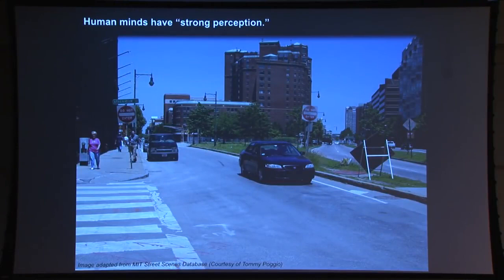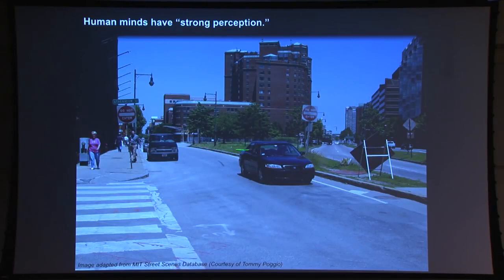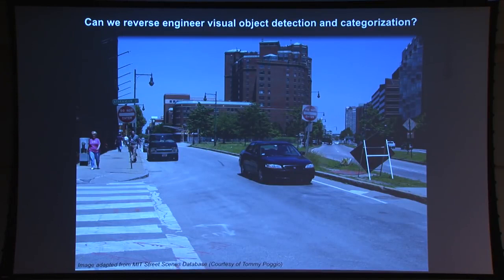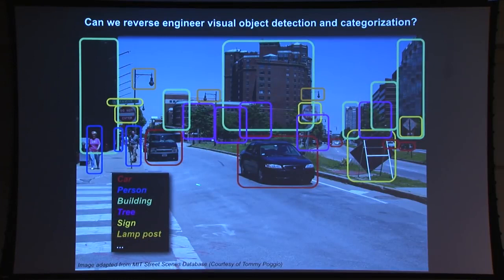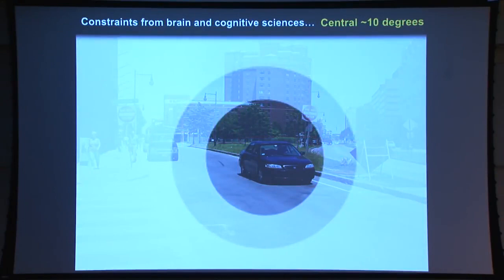This story begins with work on visual processing. Human minds have strong perception — when you look at a scene, you're able to compute a lot from what is just a pattern of light pixels. You can infer latent content: knowing this is a car, this is a person, this is a path. My lab focused on a reduced problem — just trying to understand object detection and categorization, simply being able to say: this is a car, this is a person, this is a building, this is a tree.